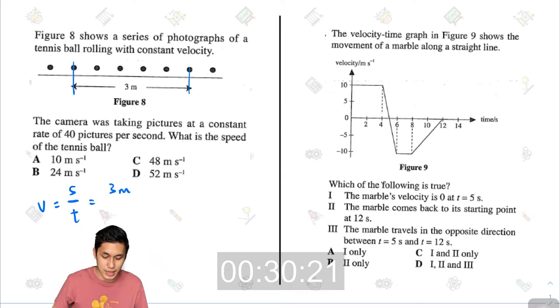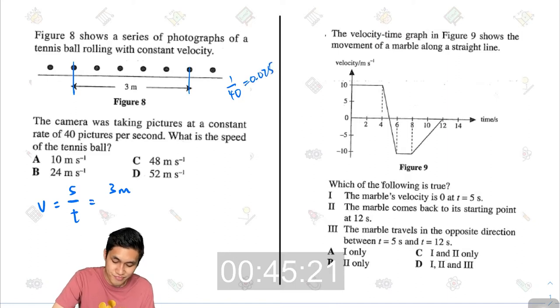Now the problem comes with the time. If it takes 40 pictures per second, that means from one picture to another picture, it will be 1 divided by 40. So 1 divided by 40, you get 0.025. That means from one picture of a tennis ball to another picture, that is 0.025 seconds.